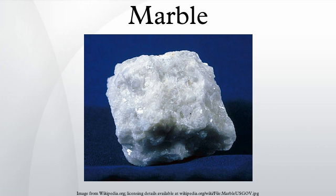This is why many sculptors preferred and still prefer marble for sculpting. Construction marble is a stone which is composed of calcite, dolomite or serpentine which is capable of taking a polish. More generally in construction, specifically the dimension stone trade, the term marble is used for any crystalline calcitic rock useful as building stone. For example, Tennessee marble is really a dense granular fossiliferous gray to pink to maroon limestone that geologists call the Holston Formation. Ashgabat, the capital city of Turkmenistan, was recorded in the 2013 Guinness Book of Records as having the world's highest concentration of white marble buildings.